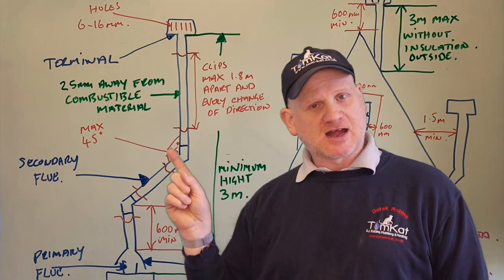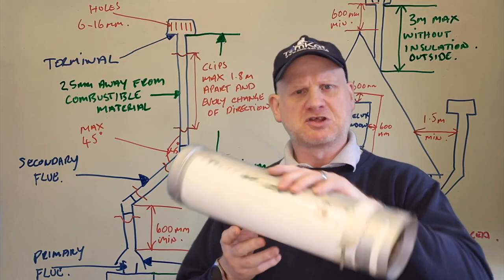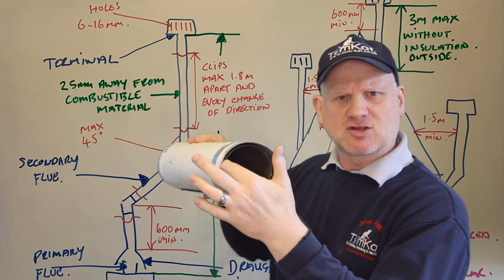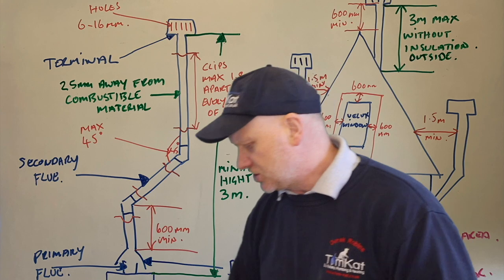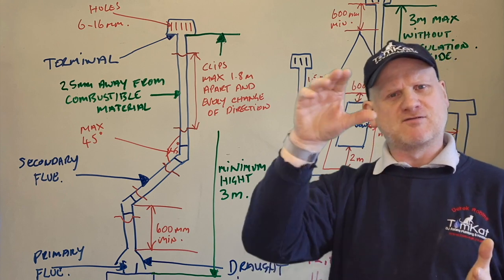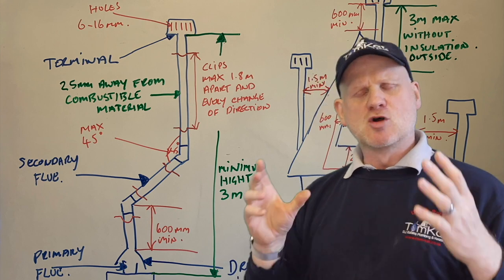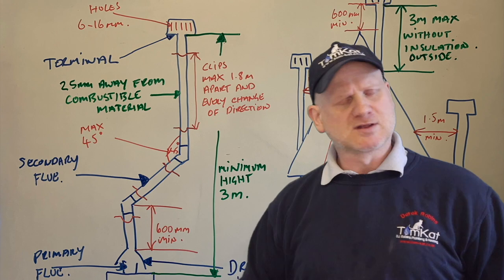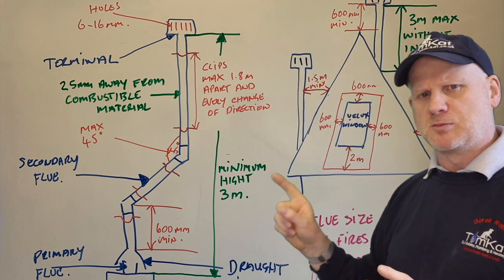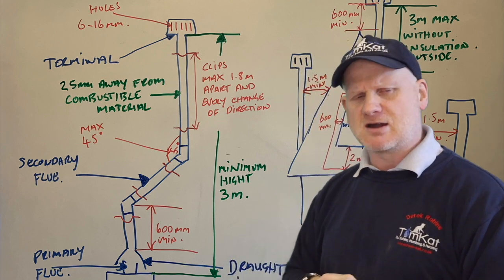Coming off the draft diverter, the next part of the flue system is the secondary flue. The secondary flue is your twin wall flue system. We call it twin wall because the internal part is where the products of combustion go and the external part is an air gap — it stops you getting burnt when you touch it. We have to have a minimum of 600mm from the draft diverter to the first bend. After that, we have flue elbows. The flue elbows cannot have more than 45 degrees of angle. We cannot have horizontal lengths — no 90-degree elbows — because it will cause problems with the pull and condensation.